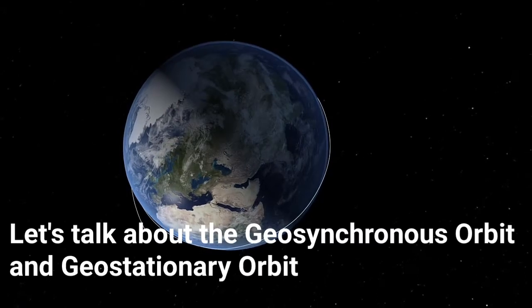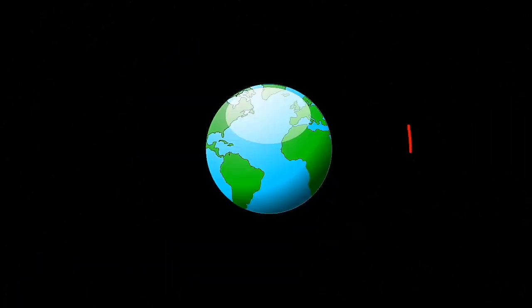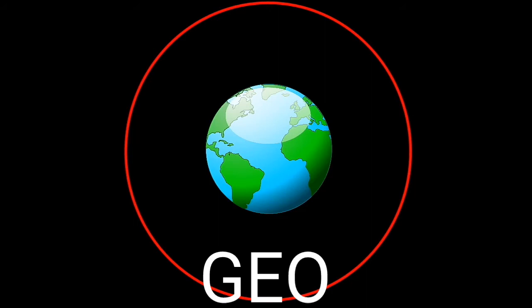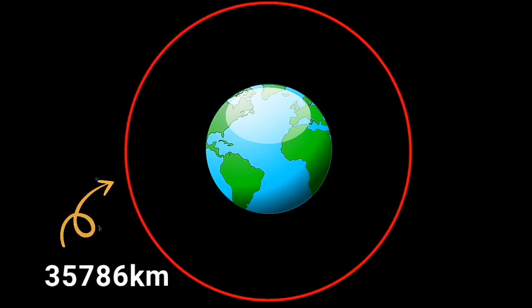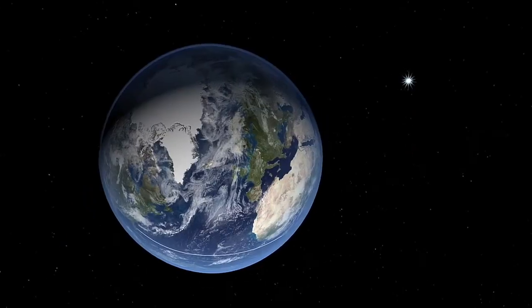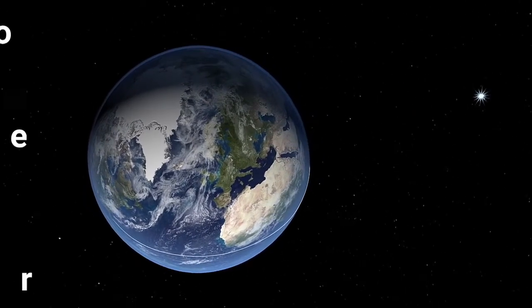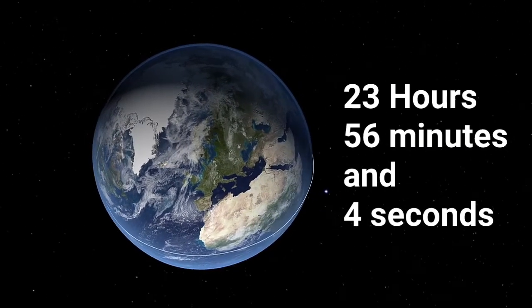Now, let's talk about the geosynchronous orbit and geostationary orbit. In the case of broadcasting, geostationary satellites in the geosynchronous orbit are at a height of 35,786 km. The satellite takes exactly 23 hours, 55 minutes, and 4 seconds to complete one rotation.